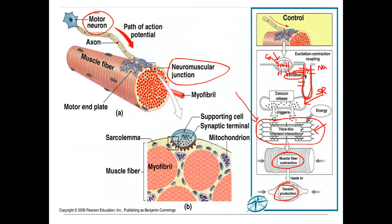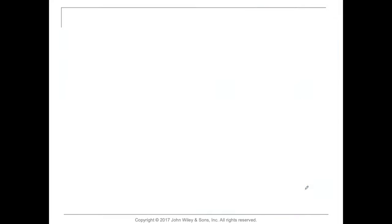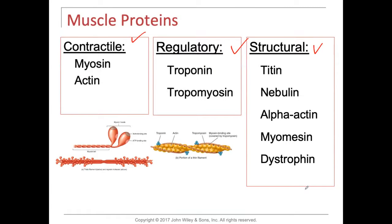When acetylcholine creates that excitation, the action potential moves down the transverse tubule and butts up against the sarcoplasmic reticulum, which stores calcium. The sarcoplasmic reticulum releases calcium into the sarcomere — which contains the thin filaments (actin) and thick filaments (myosin). That calcium is going to have an impact on the sarcomere, creating a contraction, and contraction means tension.